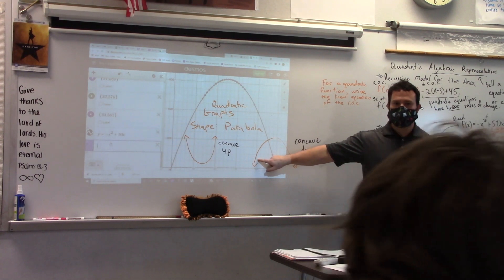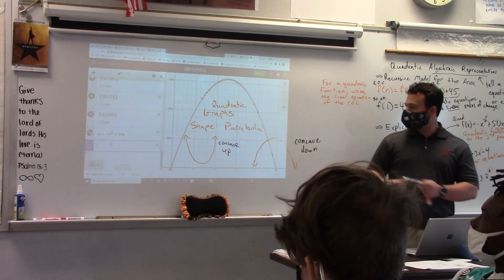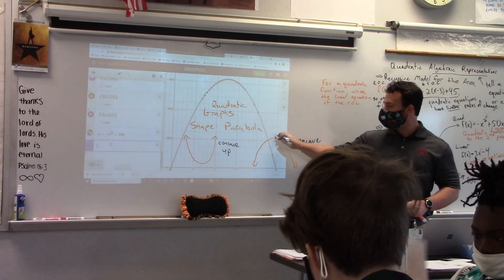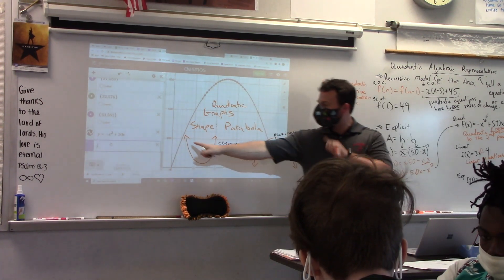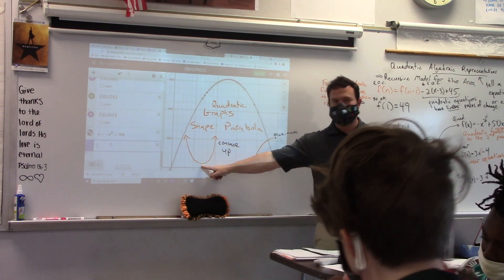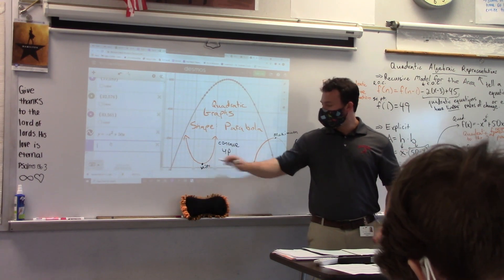Now please notice when it's concave down, you see how it both increases and then decreases. That's why we get a maximum. When it's concave up, it is decreasing then increasing. That's why we get a minimum.